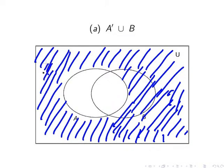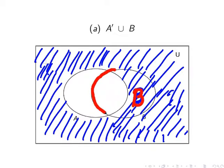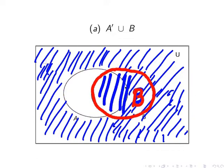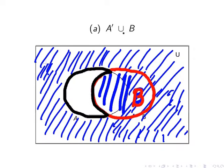We also need to consider B. Anything enclosed by the region B is also to be included. So the area we're particularly interested in is enclosed by this black line — or rather, outside of this black line. Anything in the rectangle outside of this black line fits the description of the complement of A union B.